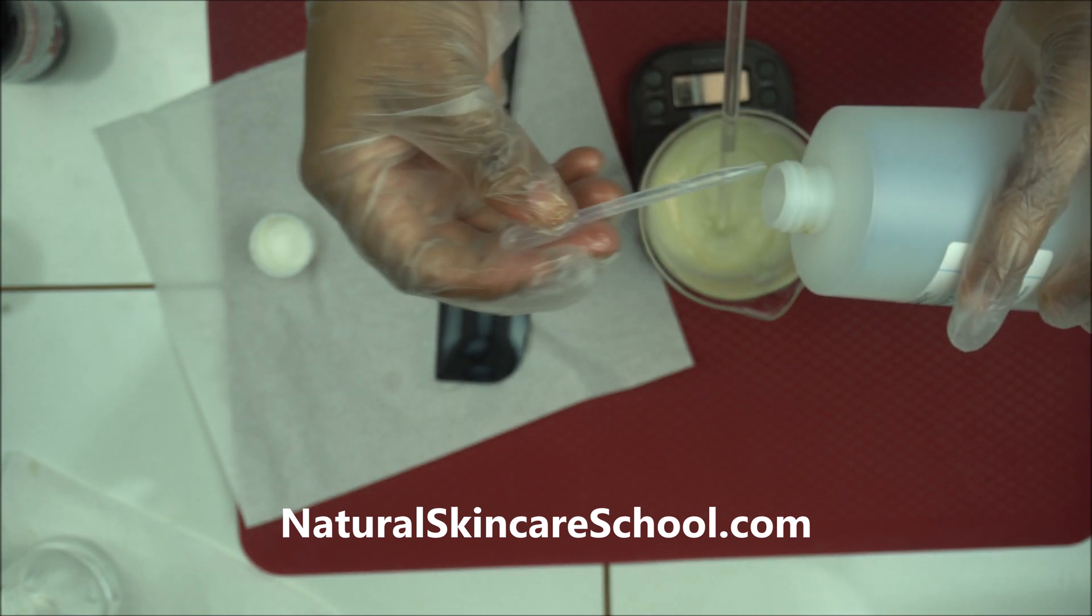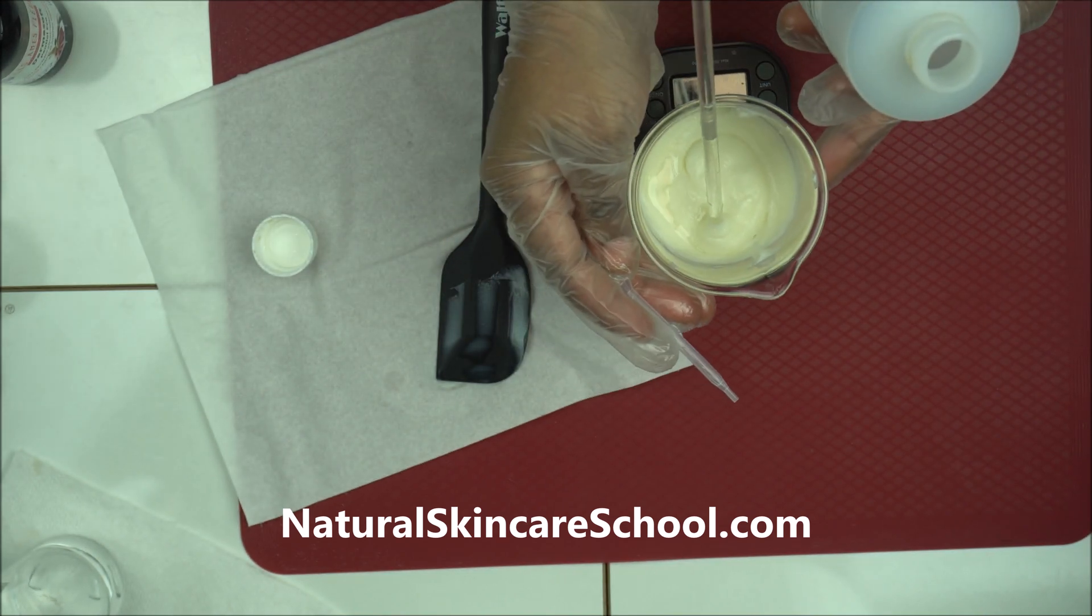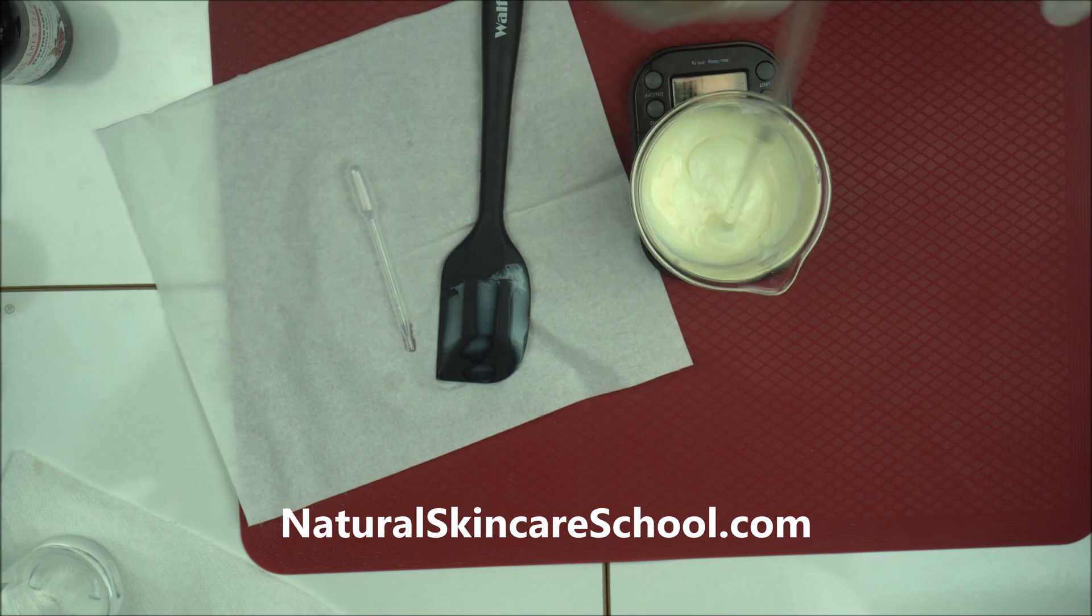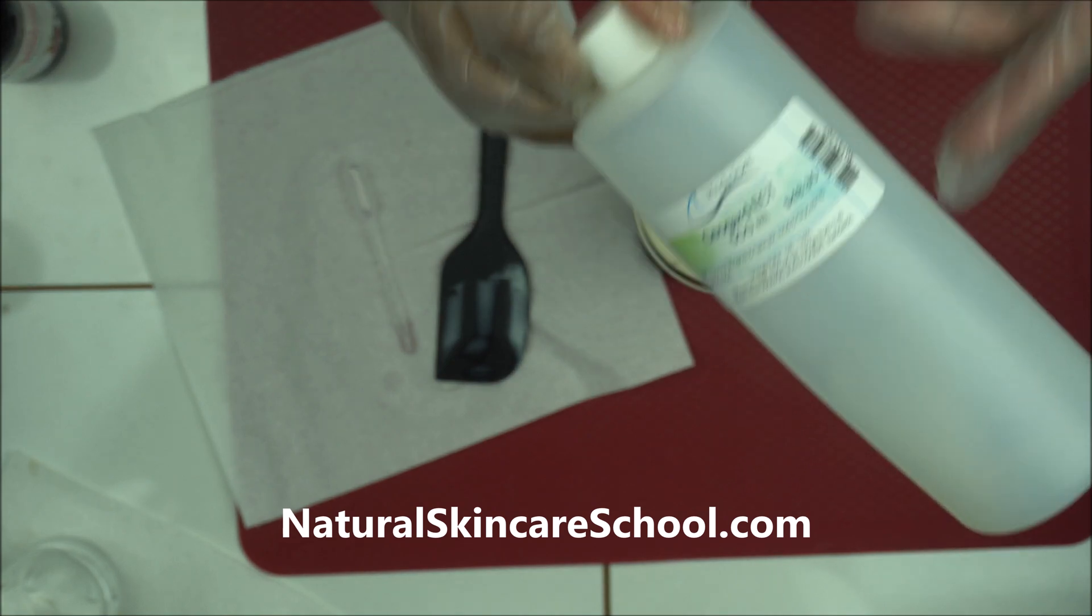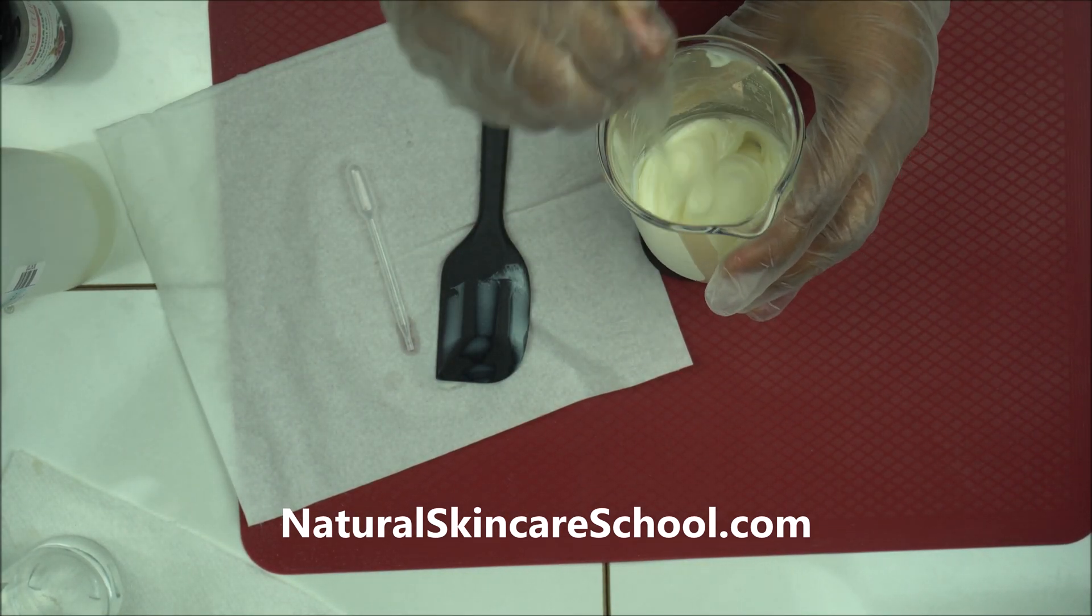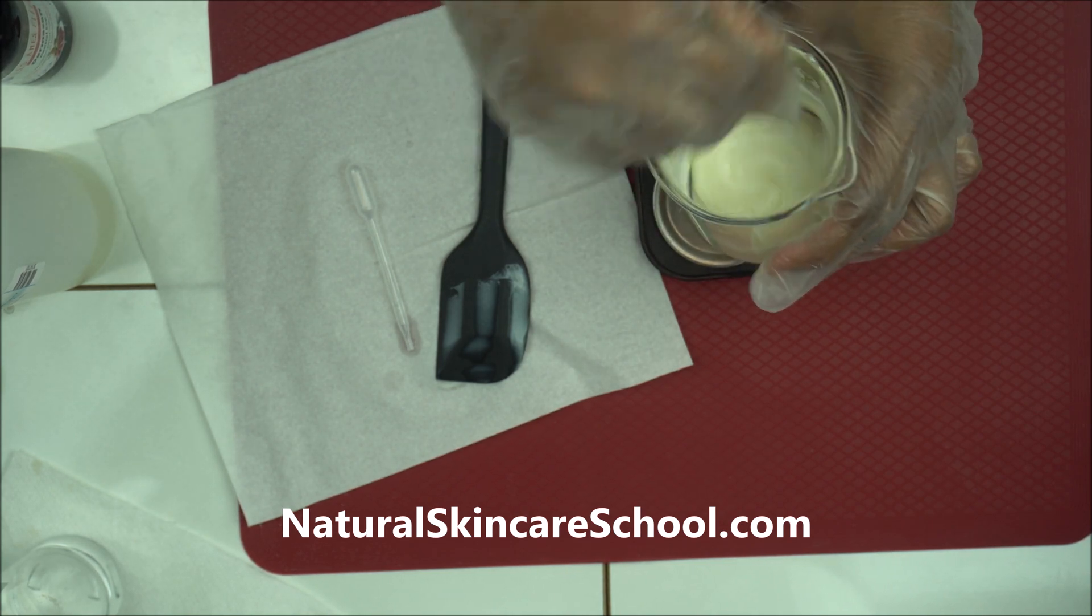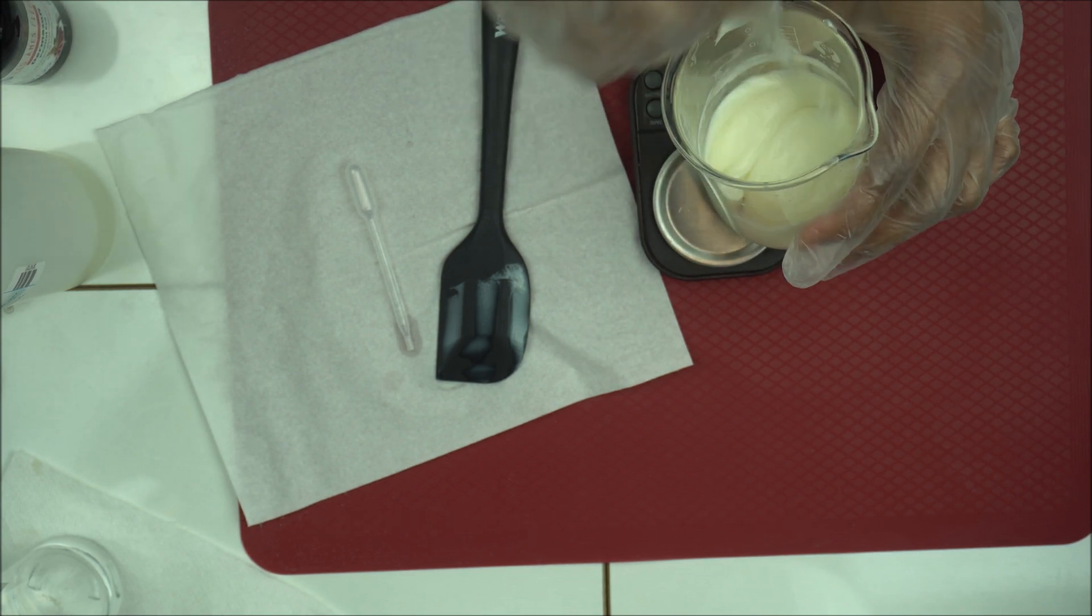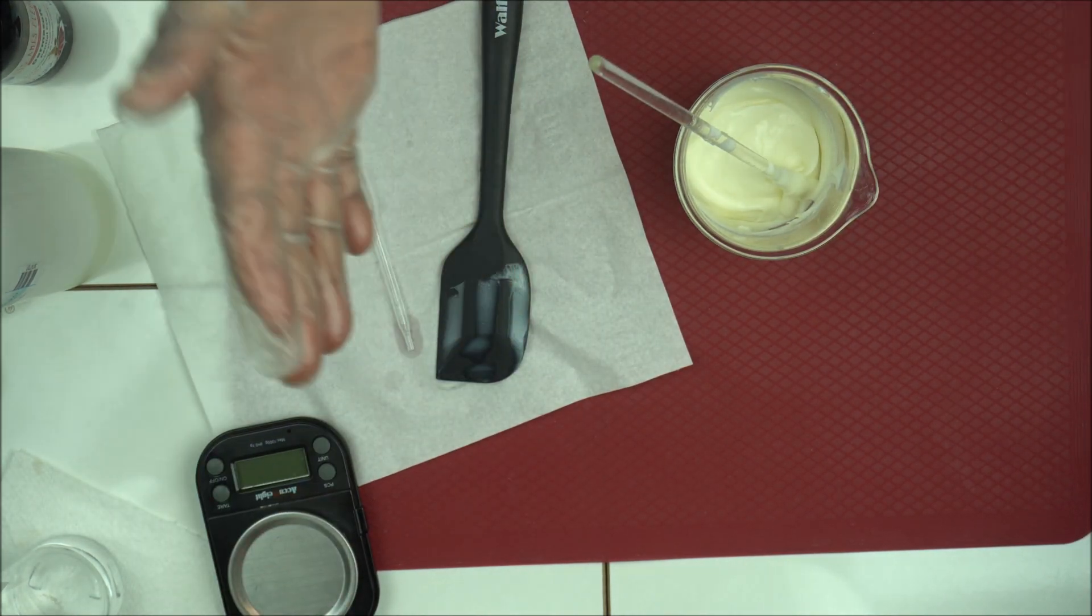I think it's more than what I need, the scale is just acting up for me. So I will just add 1%. If you are using Geogard ECT, add 1% during the cold phase and then mix it thoroughly. After mixing it, you have to make sure you check the pH of your lotion.